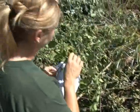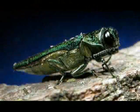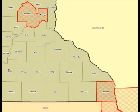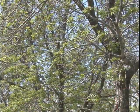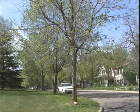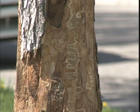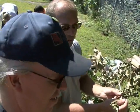Ever since emerald ash borer, or EAB, was discovered in Minnesota in 2009, the state has placed quarantine zones around known infested counties — Hennepin and Ramsey in the Twin Cities, and Houston County in far southeastern Minnesota. It's one way to help protect Minnesota's 975 million ash trees from the destructive bug that feeds under the ash bark.